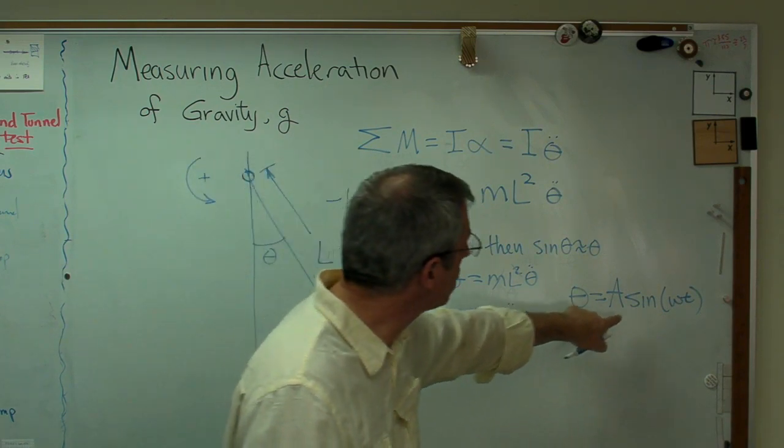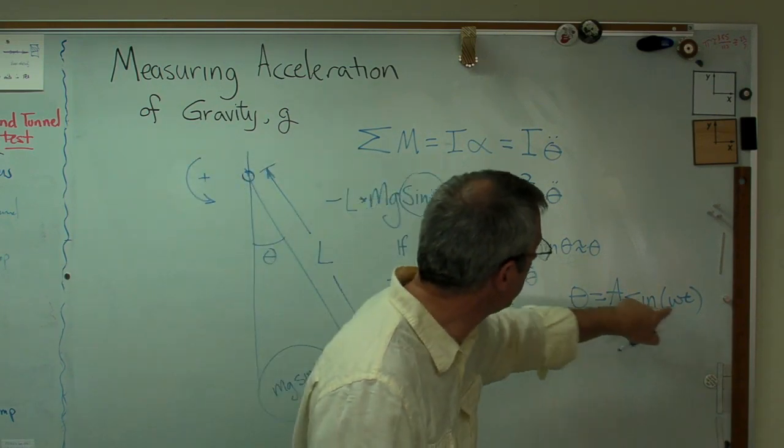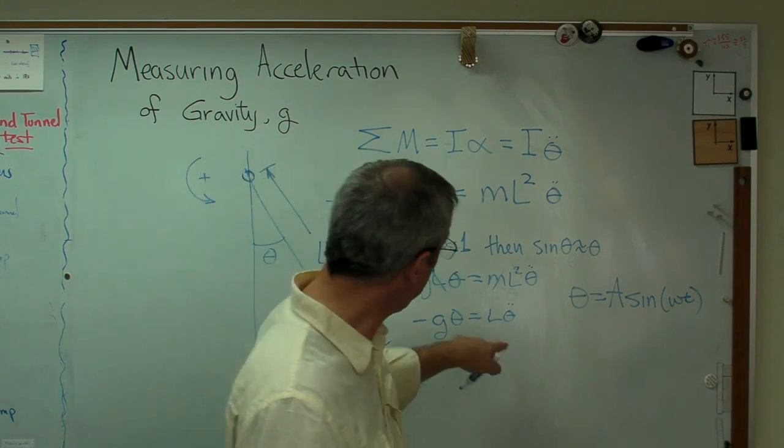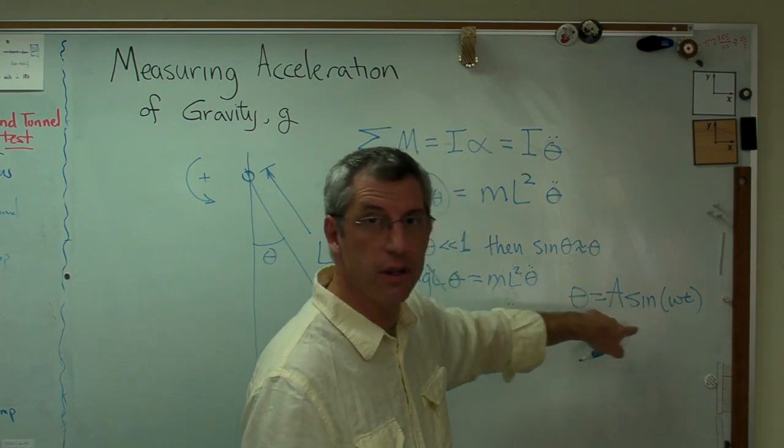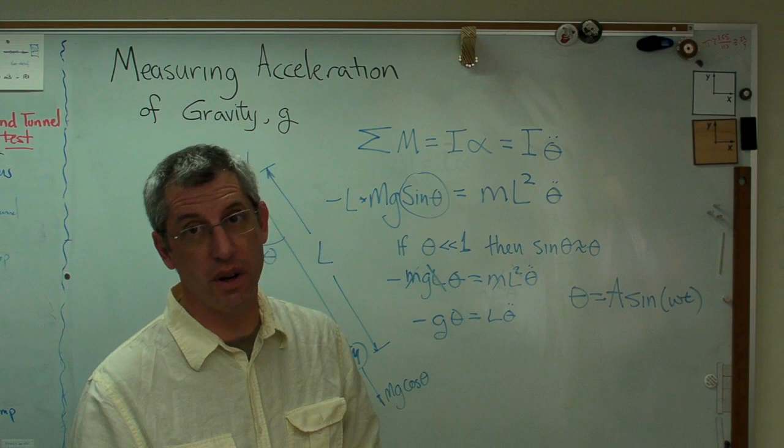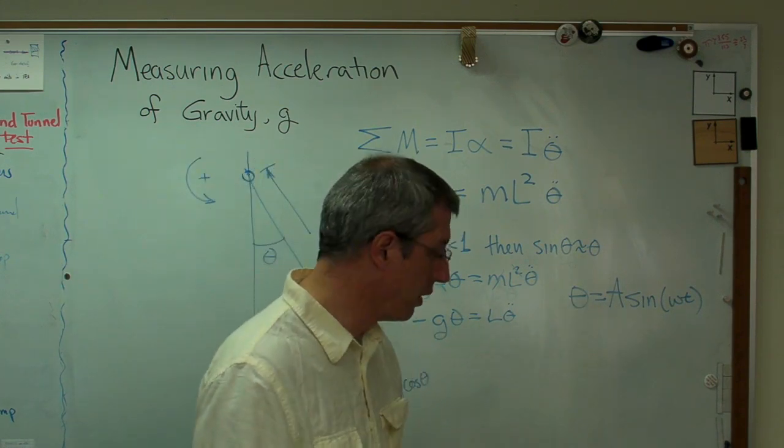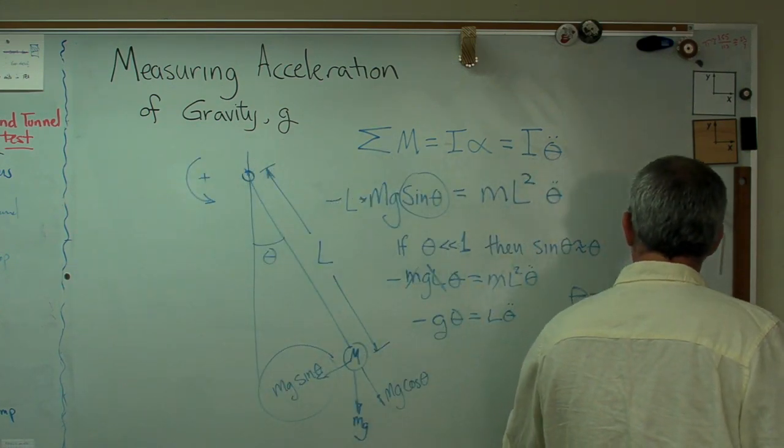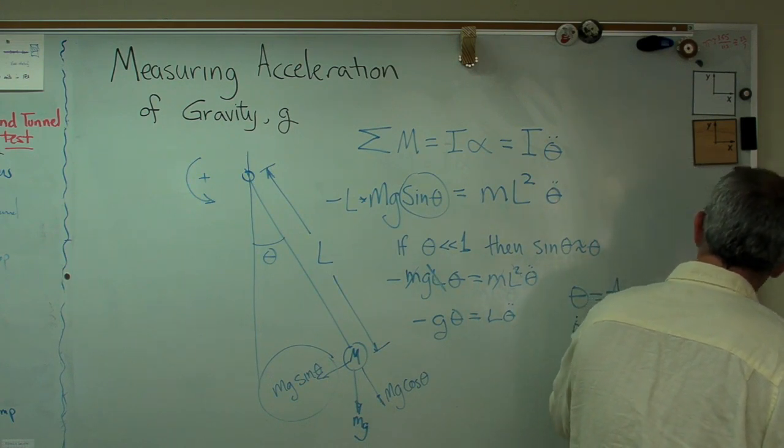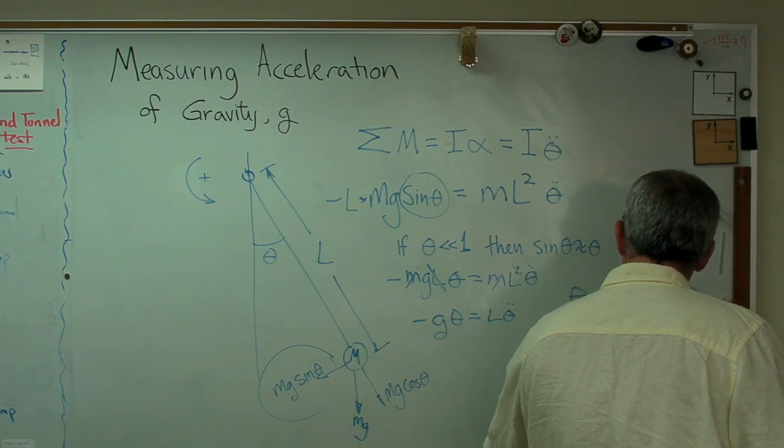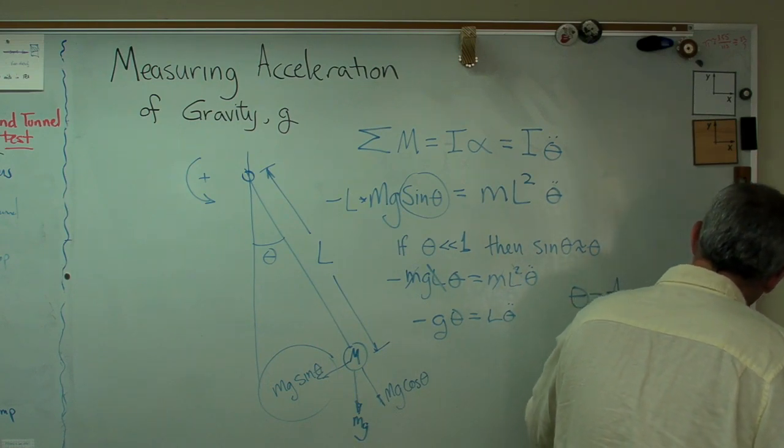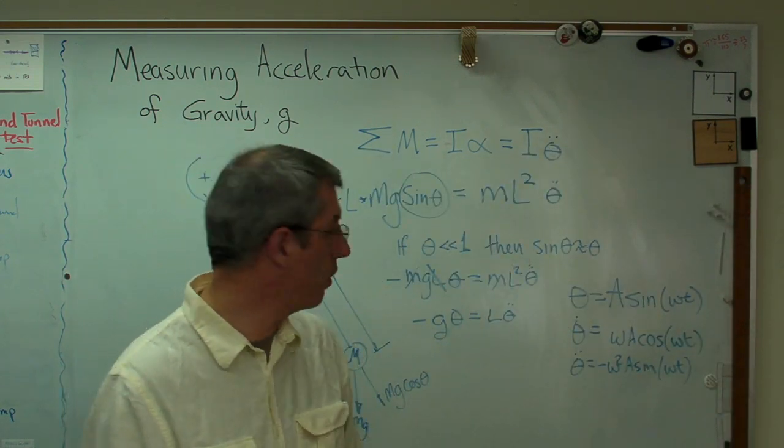All I've got to do is substitute theta, or this expression, in everywhere I see a theta. That's what a differential equation is. You have a differential equation, you're trying to find a function that makes that equation true. The solution to a differential equation is a function, not a number. So just to carry this out, theta dot equals omega A cosine omega T, and theta double dot is minus omega squared A sine omega T. That's just because of how the derivatives of sine and cosine work.